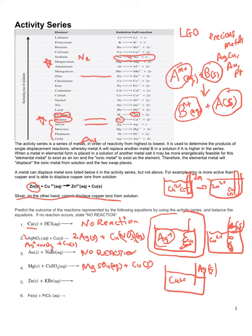Fifth: zinc and potassium bromide. Zinc is in the series, and potassium is way up at the top. Which one would rather be the ion? Potassium would rather be the ion — it already is the ion, and the reaction is written as an oxidation. Since zinc is below potassium, zinc would rather stay as the metal. No reaction.